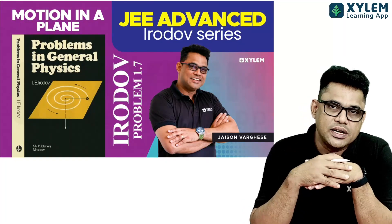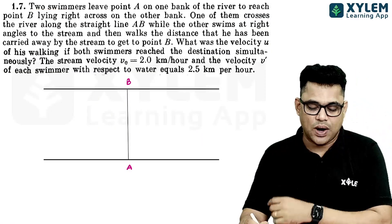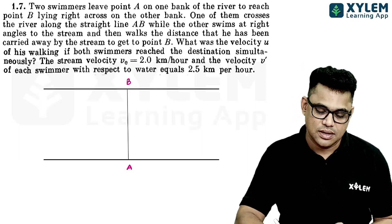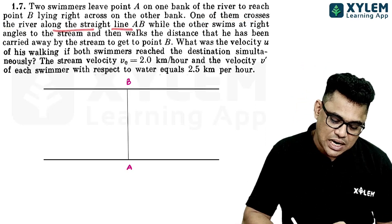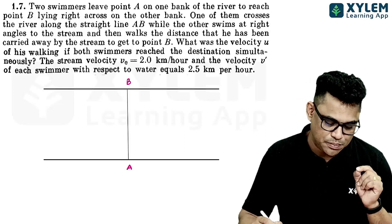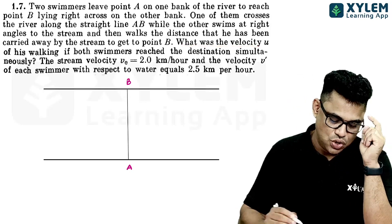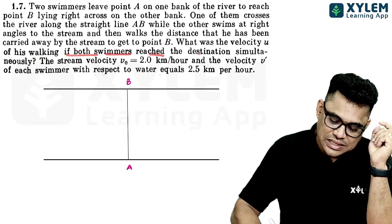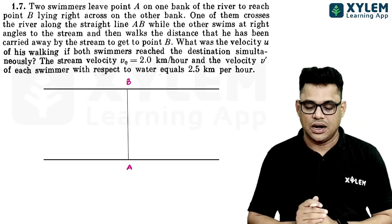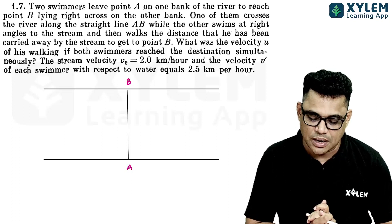Hello children. I am here to talk about problem number 1.7 and I am going to discuss the question. Two swimmers leave point A on one bank of the river to reach point B lying right across on the other bank. One of them crosses the river along the straight line AB while the other swims at right angles to the stream and then walks the distance carried away by the stream to get to point B. The stream velocity V0 is 2 km/h and the velocity V' of each swimmer with respect to water equals 2.5 km/h.